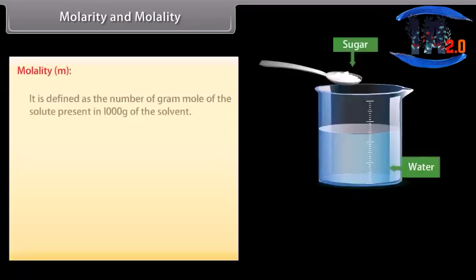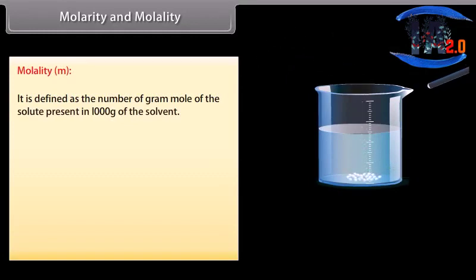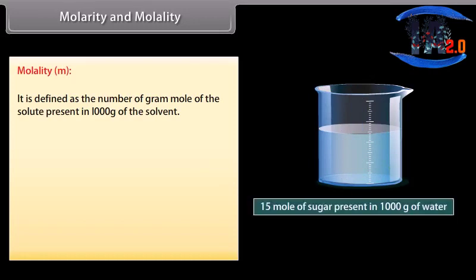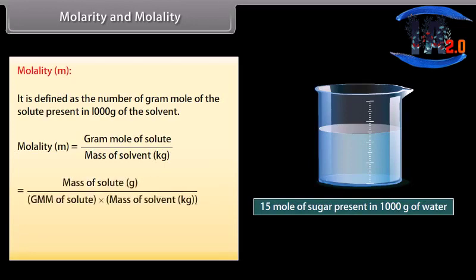Molality is defined as the number of gram moles of the solute present in one thousand grams of the solvent. It is represented by small m. Mathematically, molality m is equal to W_B in grams divided by the product of gram mole mass of B and W_A in kilograms. A solution containing one mole of solute per one thousand grams of solvent has molality equal to one and is called a molal solution.